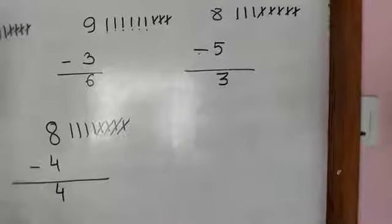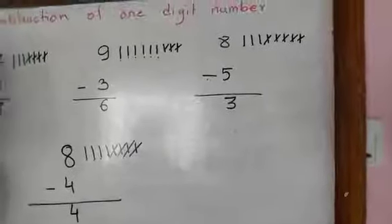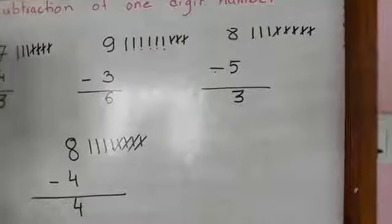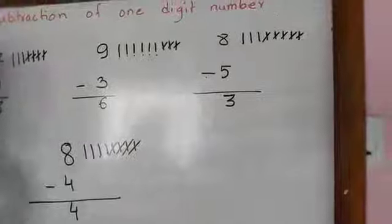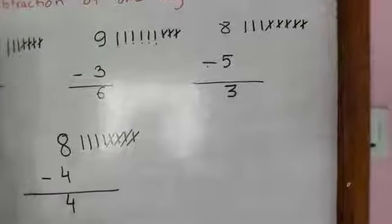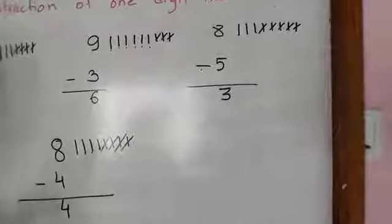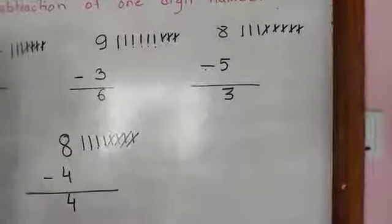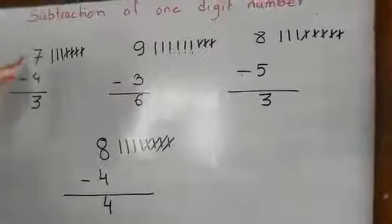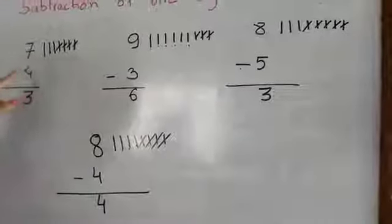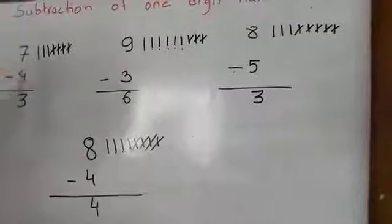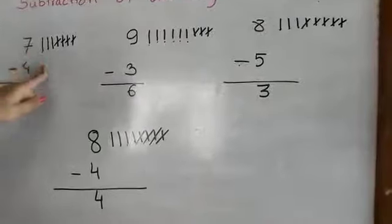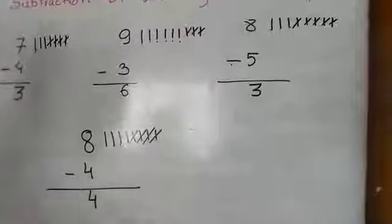So this is how we do subtraction. I will give you an assignment for you to do. And in the next video we will learn subtraction of 2 digit numbers. I hope you have understood 1 digit number. All you need to do is draw sticks for the bigger number, and then minus the number that's below the bigger one, and write the number that is left.